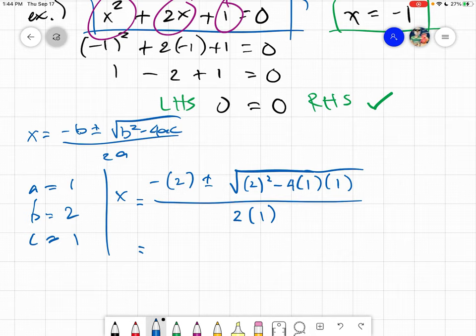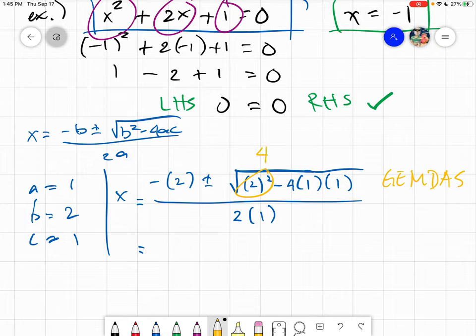After we have substituted, we evaluate. Remember that when you are evaluating, please be reminded of GEMDAS. We always check the groupings first, then evaluate exponents. We evaluate 2 squared, it becomes 4, so we have negative 2 plus minus square root of 4 minus 4 times 1 times 1.